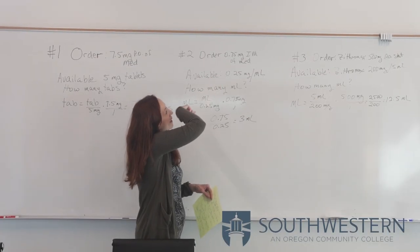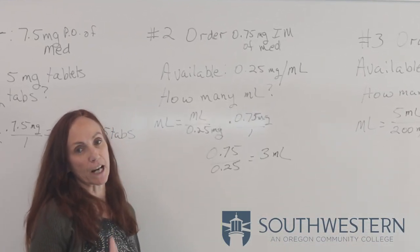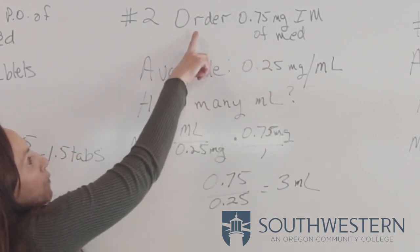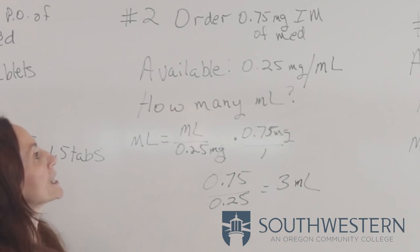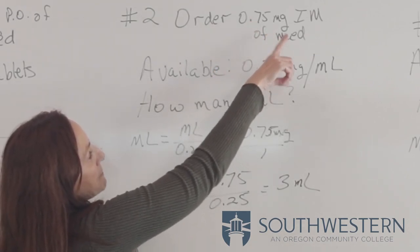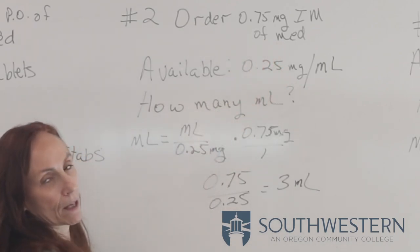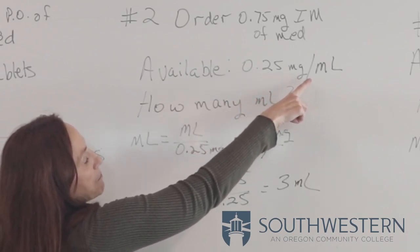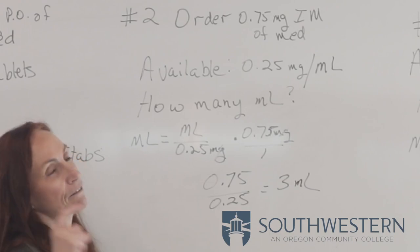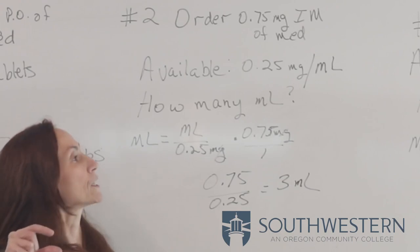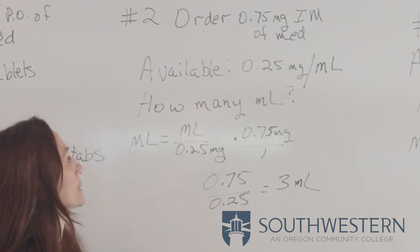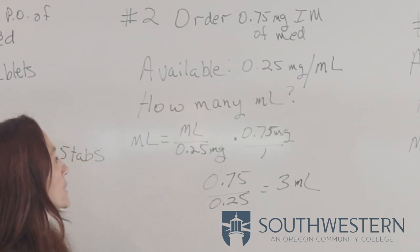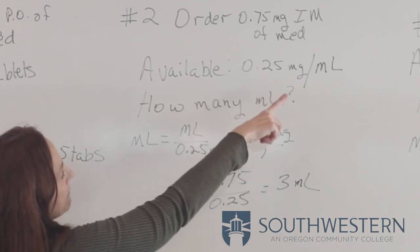The next order is for an injectable — an intramuscular injection. The physician wants 0.75 milligrams IM of a medication. The pharmacy has provided 0.25 milligrams per milliliter, meaning for every milliliter of solution I have 0.25 milligrams of medication. What I want to know is how many milliliters I'm going to administer to that patient.